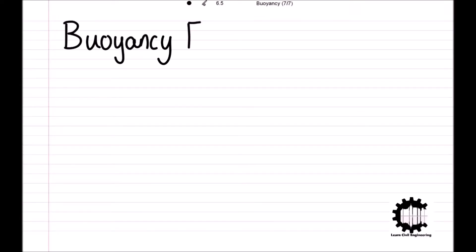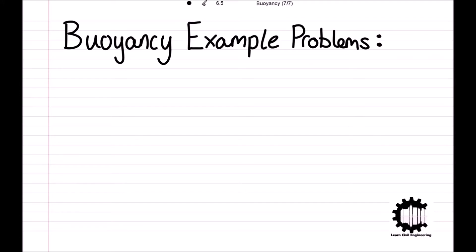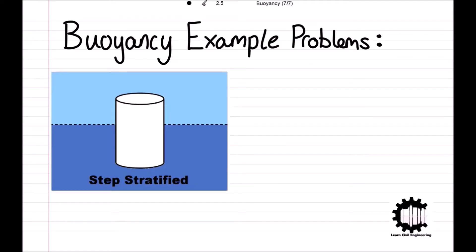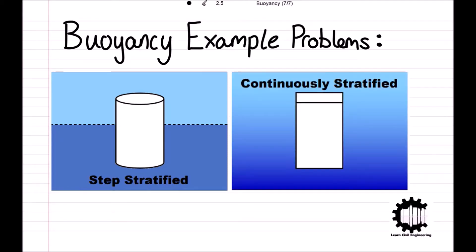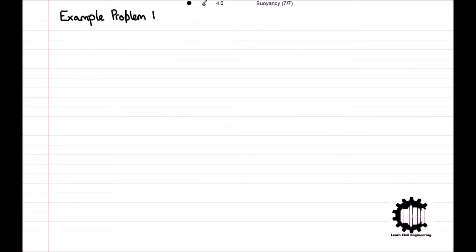Welcome everyone to this video by Learn Civil Engineering, where we will be working through two buoyancy example problems. The first problem features a fully submerged cylinder in a state of equilibrium in a step stratified liquid, and the second problem features a cuboid in a state of equilibrium in a continuously stratified liquid. Let's have a look at the first problem.